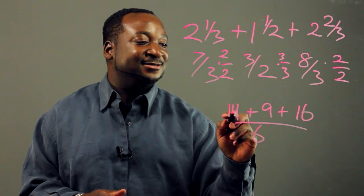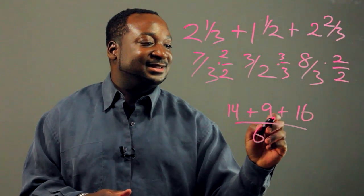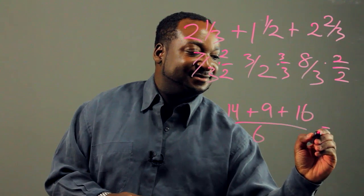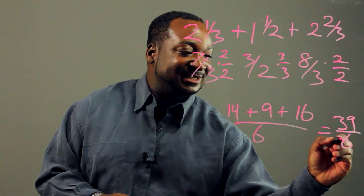Okay, we know that equals 20, 30, so we get 39 over six.